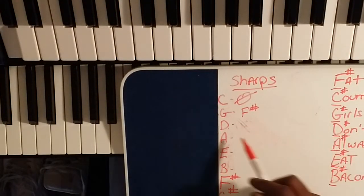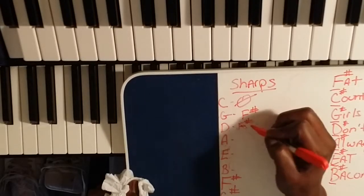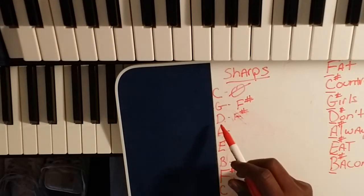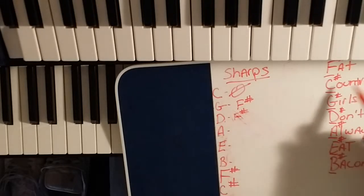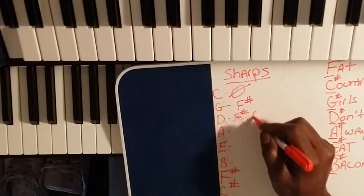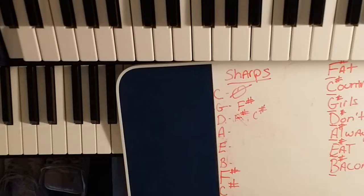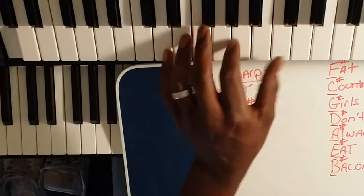For the key signature of D, I already know I've got an F sharp. I just say the mnemonic until I get to the letter that is a seventh from D. If D is your one, then some kind of C has to be your seven. So I say 'Fat Country' — F sharp and C sharp. The key signature for D major is F sharp and C sharp. As a keyboard player, if I'm playing in the key of D, I just think F sharp and C sharp, and everything else is white notes.